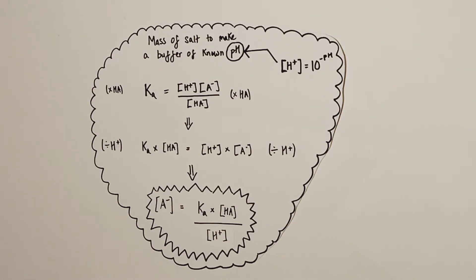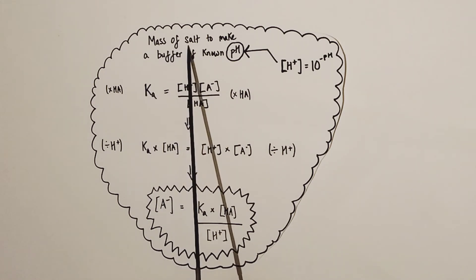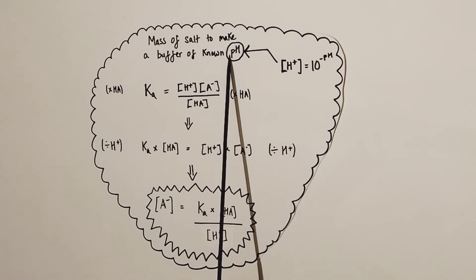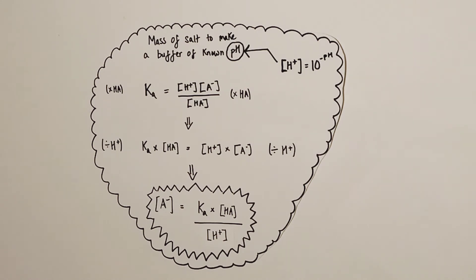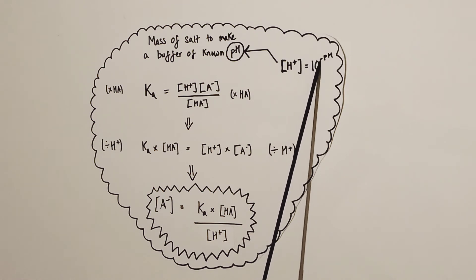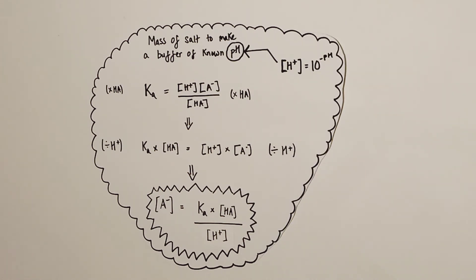This time, imagine the question isn't asking for the pH of the buffer itself, but how to make a buffer of a known pH — specifically, working out what mass of salt to add to achieve a given pH. The first step is to work out the hydrogen ion concentration from that pH: H+ = 10 raised to the power of negative pH. We then rearrange the Ka expression to make the concentration of A- (conjugate base) the subject, since all that conjugate base came from the dissolved salt.